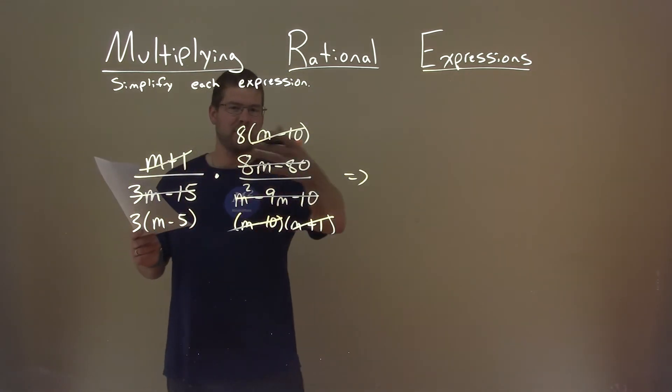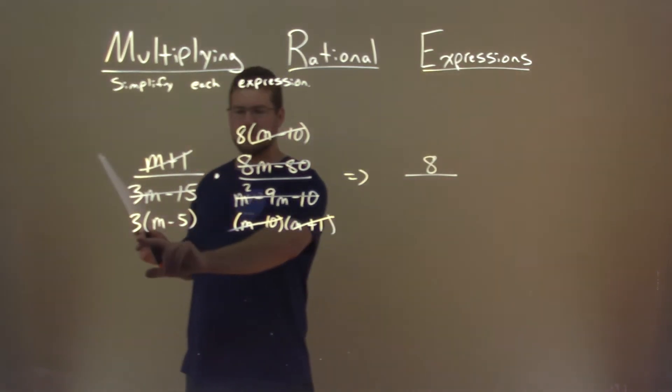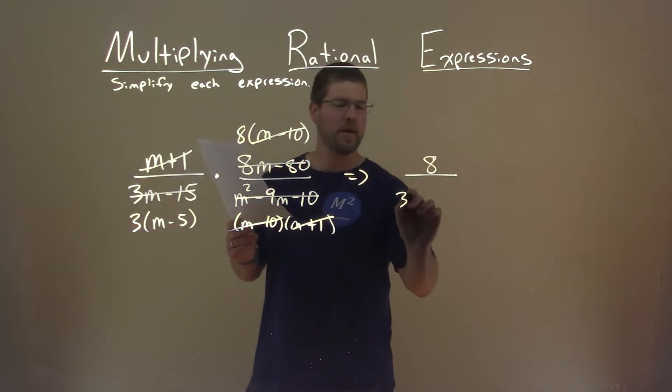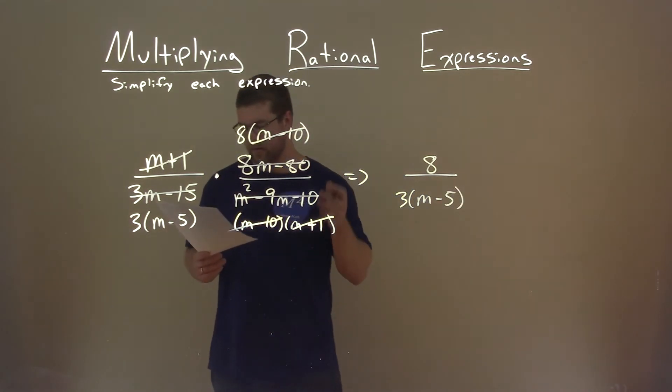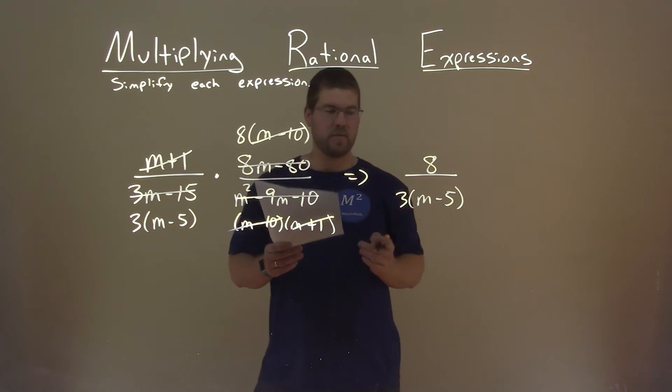So let's bring everything over we have left over. 8 in the numerator over 3 times m minus 5. So that's it. Our final answer is 8 divided by 3 times m minus 5.